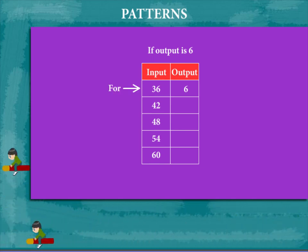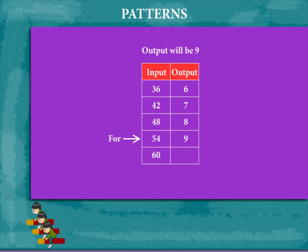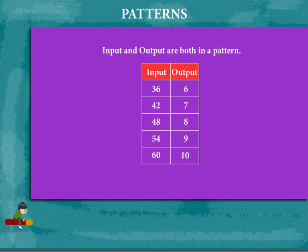Simple, because 6 times 6 is 36. So the next output for 42 will be 7, because 6 times 7 is 42. Then 8, then 9, then finally 10 for 60. Input and output are both in a pattern.